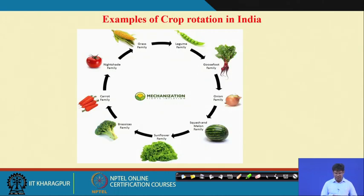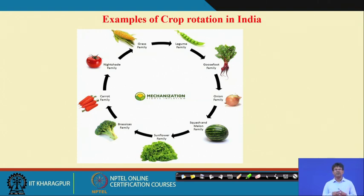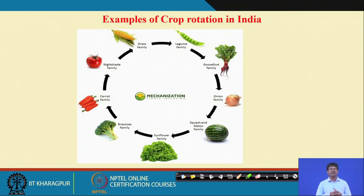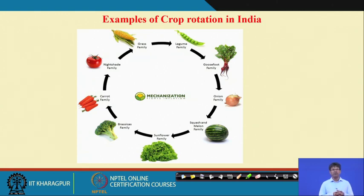As an example of crop rotation in India, different crop groups — root crops, cereal crops, legume crops, fruits, and brassica family crops — can be rotated in a system to maintain soil fertility, better soil health, better quality of produce, and a better environment. Thank you very much.